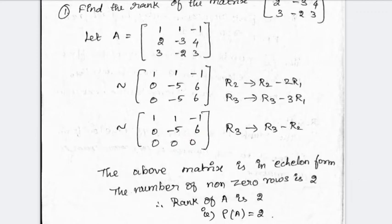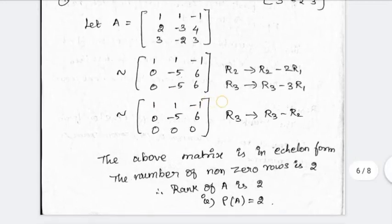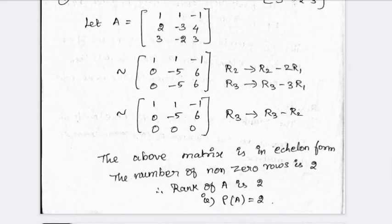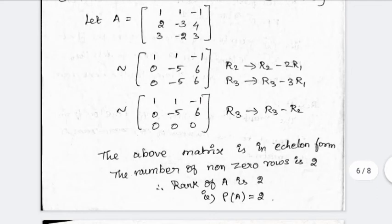This format is Echelon form. The rank equals the number of non-zero rows. We have non-zero rows counted — the zero rows don't count. If a row has even one non-zero element, we consider it a non-zero row. The rank of the matrix is 2.